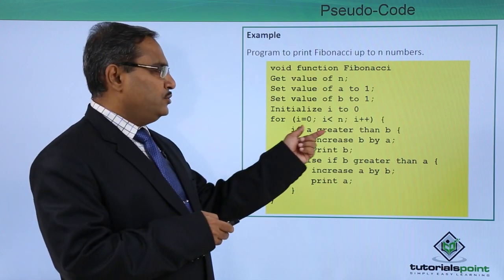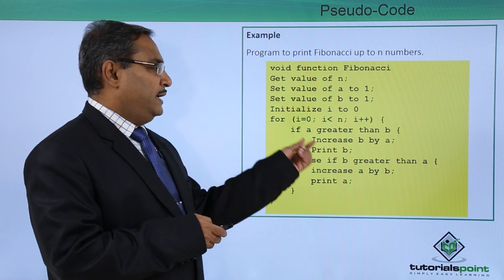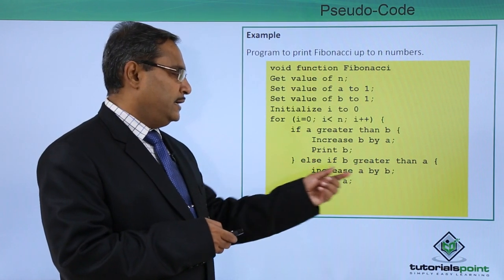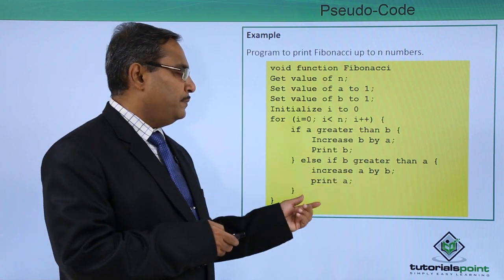For i equal to 0, i less than n, i plus plus. If a greater than b, increase b by a, print b. Else if b is greater than a, increase a by b and print a.